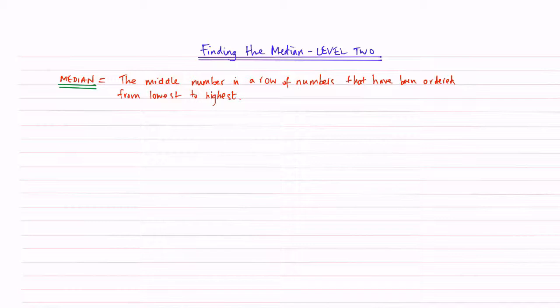This video follows on from our first video of our median series, finding the median level 1. In that video we were looking at how to find the median when there were an odd number of numbers in a row. For example, when there were 7, 5, or 11 numbers written in a row. Now in this video we are looking at how to find the median when there are an even number of numbers in a row.